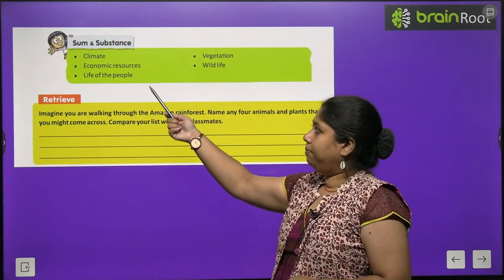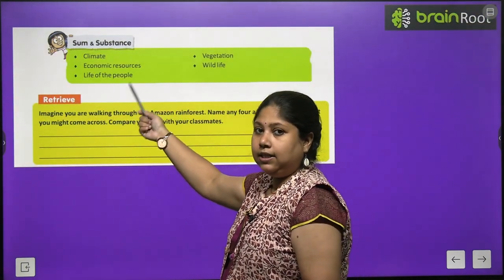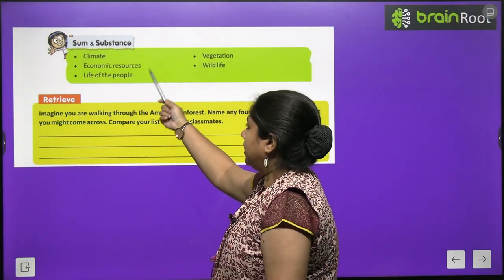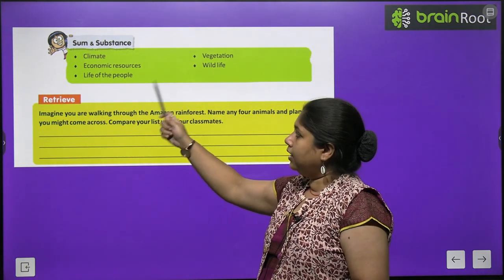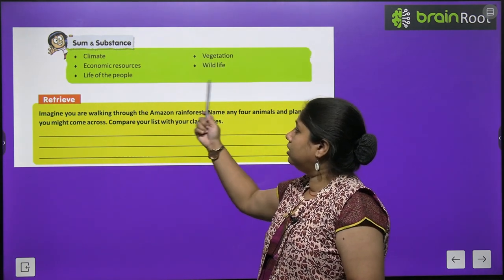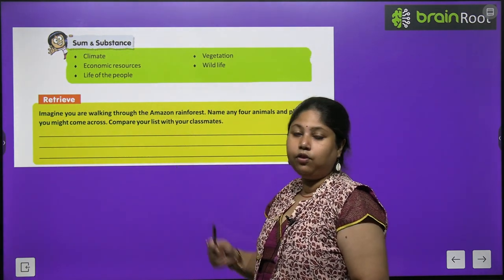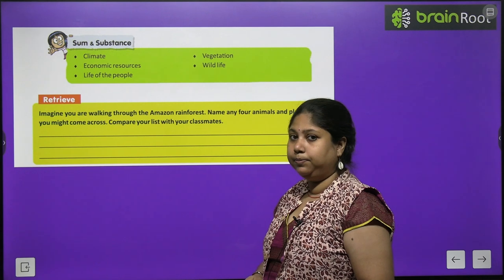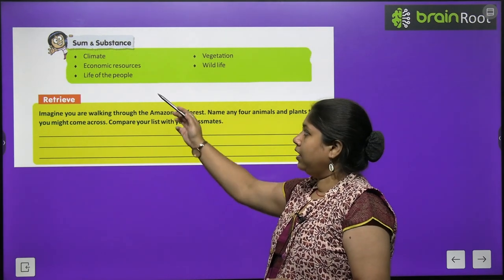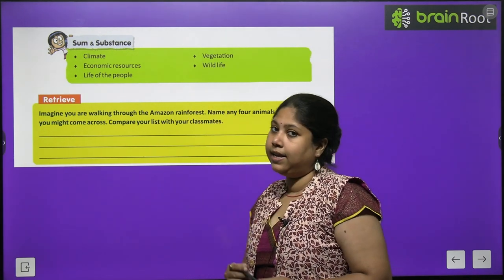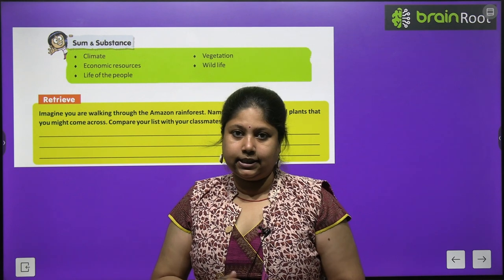In this chapter we are going to study these concepts: climate, vegetation, economic resources, wildlife, and life of the people. We would be covering all these important topics in our chapter number 6.